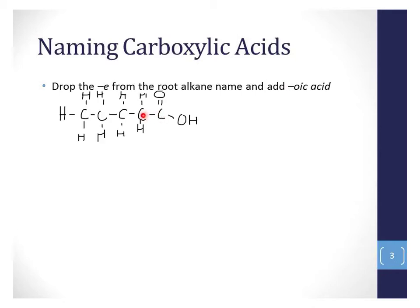Here we have a five-carbon chain. Don't forget to count this carbon, and we start our counting there as we did with aldehydes. We can see a five-carbon chain, so the root name would be pentane. We drop the E from pentane and we now have the name pentanoic acid.